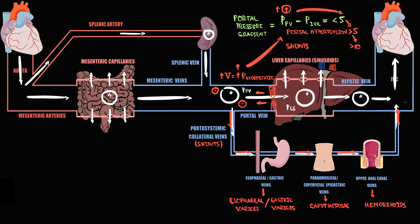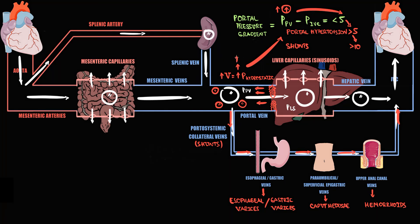With time, due to thrombosis, a higher volume of blood becomes stuck inside the portal vein. The more blood accumulates, the more severe portal hypertension becomes. The portal pressure gradient now becomes higher than 12, and the more severe portal hypertension becomes, the more volume of fluid goes into the portosystemic collateral vessels.